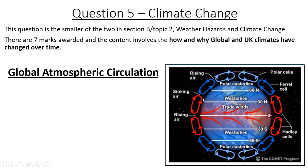What we're really interested in are these circles or cells of air, which have special names. This line along the middle of the Earth is the equator. Just above and below the equator, you get cells called Hadley cells, named after a chap called Hadley. Above and below those, you've got your Ferrel cells. And then above and below those, you've got polar cells, named because they occur near the poles.